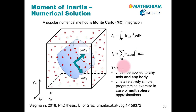Especially for the multisphere approximations, this is a relatively simple programming exercise. The reason is that in the case of multispheres, we know the centers and the radii of each of the composite spheres. We then just have to check whether these tracer particles are inside one of the composite spheres or not.